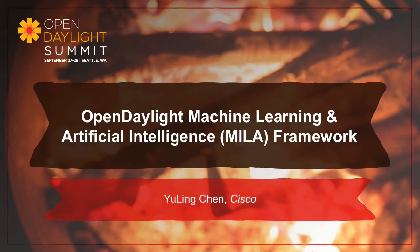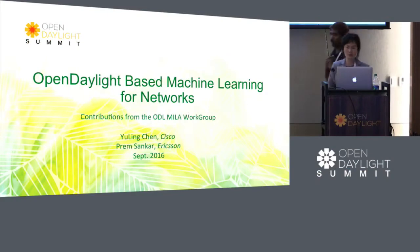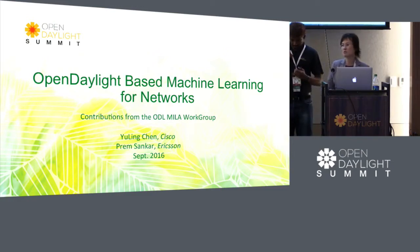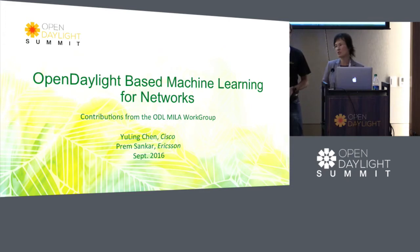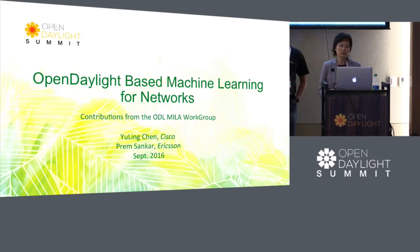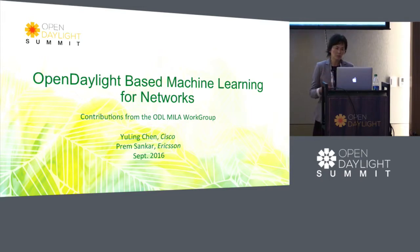My name is Yuling Chen from Cisco, together with me Prem Shankar from Ericsson, and today we're going to present this topic of OpenDaylight-based machine learning for networks. We share the same view as yesterday's keynote from Dave Myers — currently most SDN products are using static control of traffic in the network, and we believe the next generation of SDN needs to be dynamic control of the network based on current status. We believe we would need to leverage machine learning in this case.